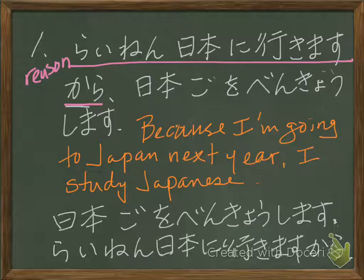You can also say this sentence in a different order. You say 日本語を勉強します — the resultant clause — first. But then you add the reason later: 来年日本に行きますから — 'Because I'm going to Japan next year.' The first example sounds like a more organized sentence, while the conversational form states the result first and adds the reason afterward.